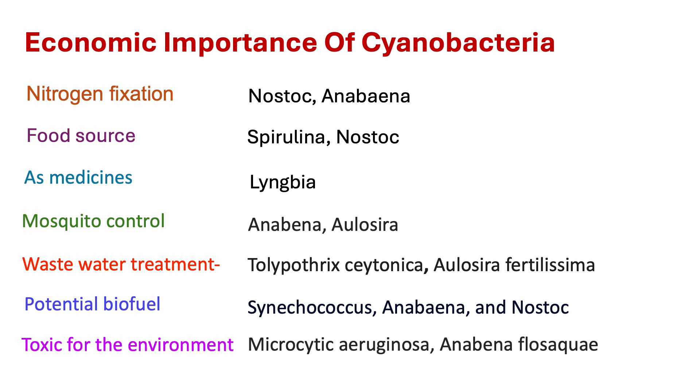Economic importance of cyanobacteria: they can be used as natural fertilizers. Certain species fix atmospheric nitrogen and provide it to plants and crops, which is essential for growth. Species such as Nostoc, Oscillatoria, Scytonema, and Spirulina are commonly used as bio-fertilizers in rice fields. Food source: Spirulina is a particularly popular food item in many countries, valued for its complete protein profile and high vitamin content. Medicinal applications: from extracts of Lyngbya, several antibiotics can be manufactured.